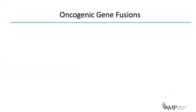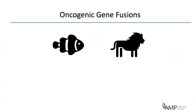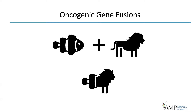First, let's review what we mean by gene fusion. A gene fusion happens when a part of one gene, represented here by the fish, connects to a different gene, often from a completely different part of the genome, represented here by the lion. DNA breaks happen in each gene, and they combine to create a hybrid or chimeric gene. The hybrid DNA translates to hybrid RNA, which becomes a hybrid protein.